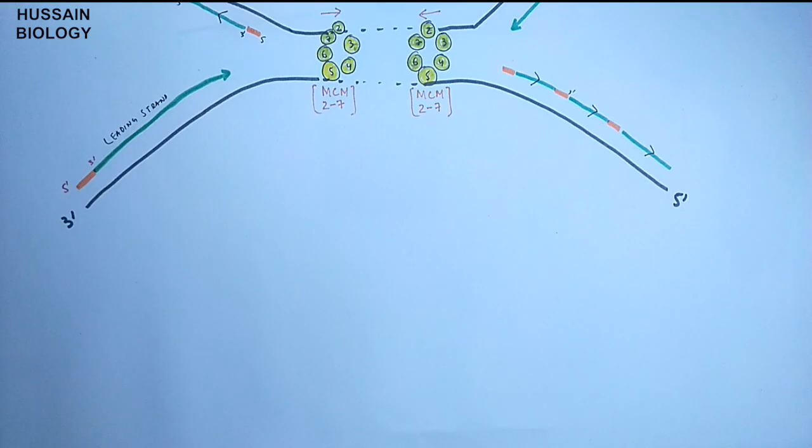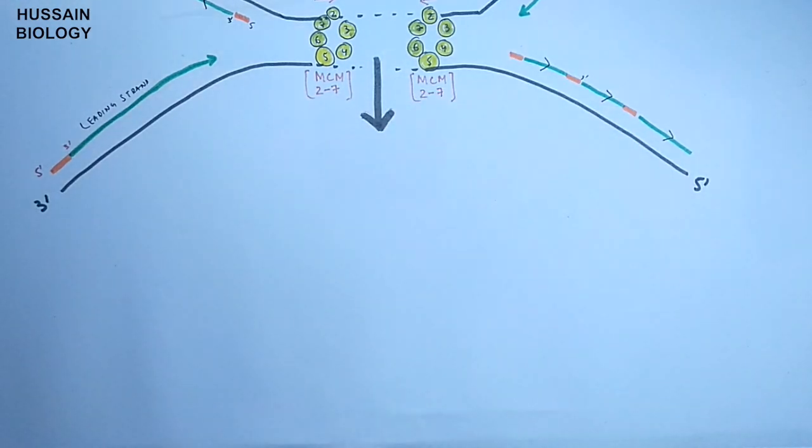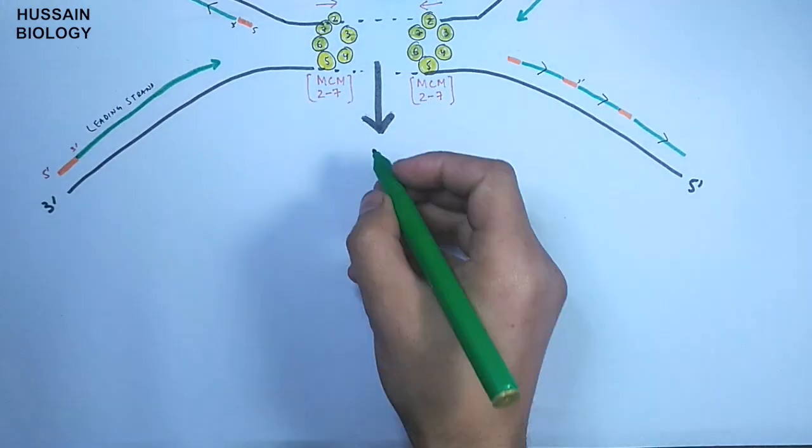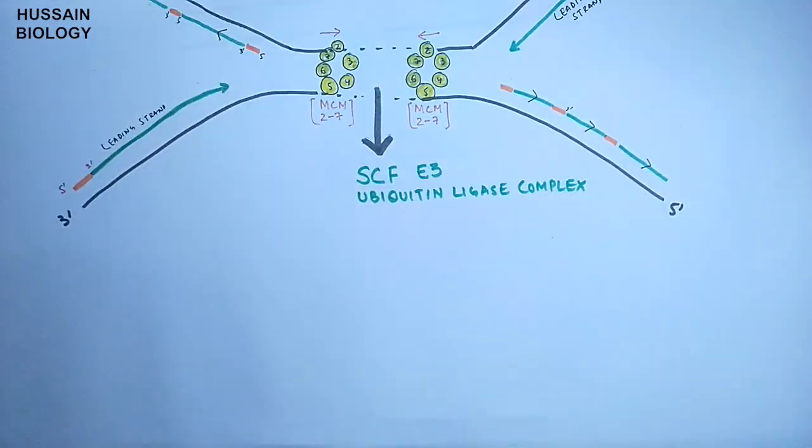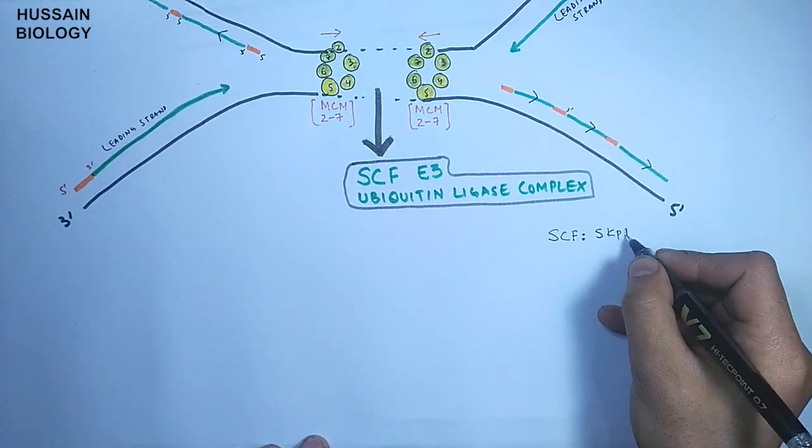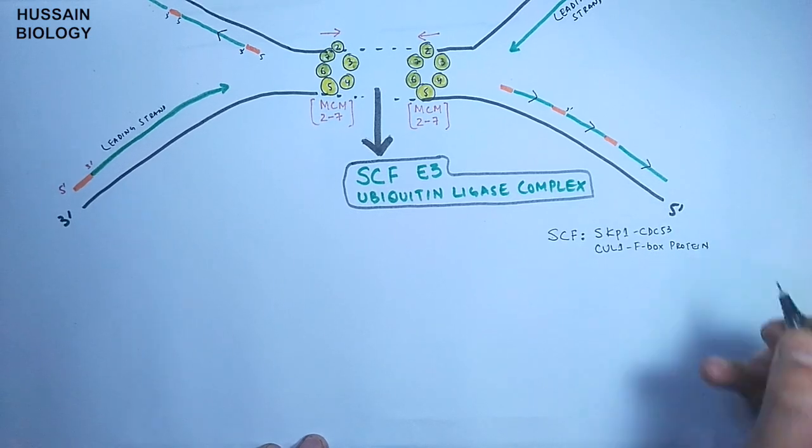Now at some point, the two MCM complexes converge and we need this replication to go off. So for that purpose we have SCF E3 ubiquitin ligase complex. The SCF is the Skp, Cdc53, Cullin, F-box protein.